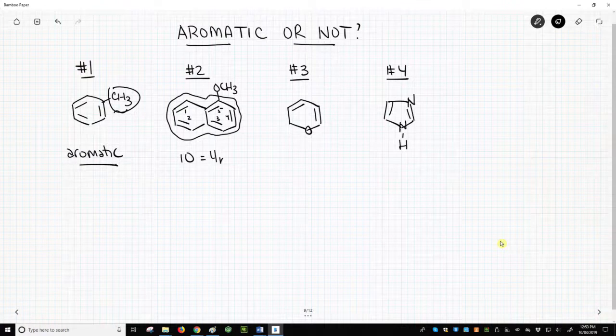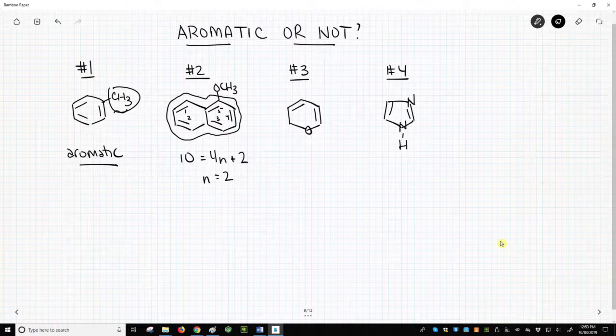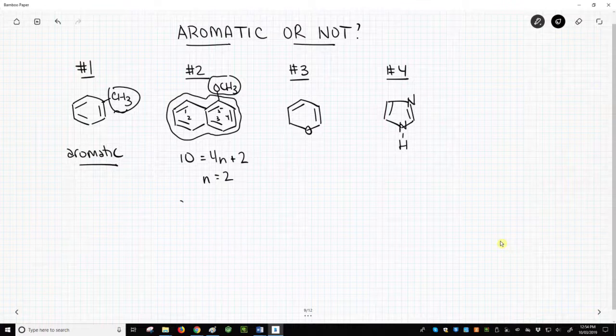10 equals 4n plus 2. N equals 2. That is a non-negative integer, so this ring is aromatic. Just like with toluene, the side group – the methoxy – has no impact. This molecule is aromatic.